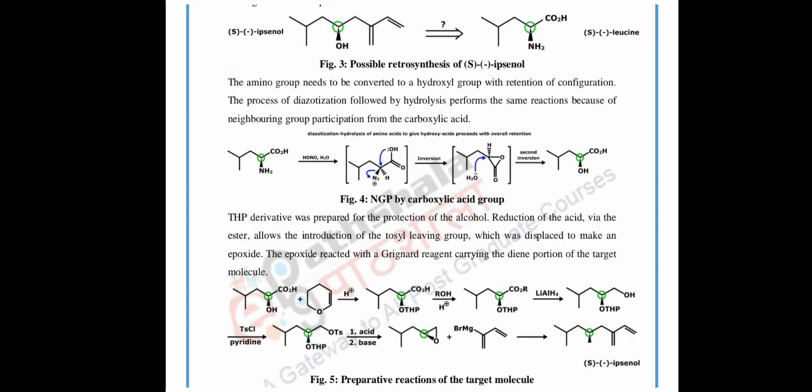The process of diazotization followed by hydrolysis is applied. Leucine is taken and HONO in H2O is added. What happens is neighboring group participation (NGP) by the carboxylic acid group: the lone pair of the COOH oxygen attacks the carbon bearing the NH2, and then N2 is lost, giving inversion of configuration at that center. Hydrolysis then takes place.